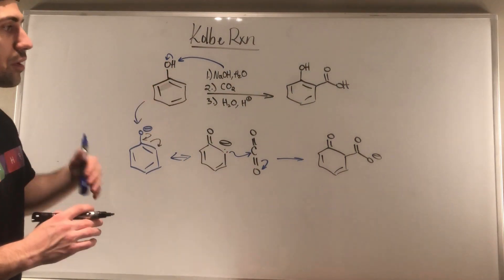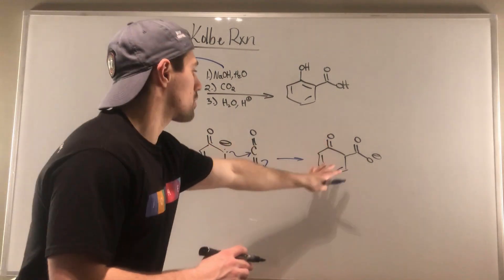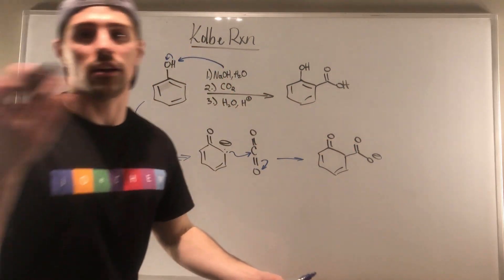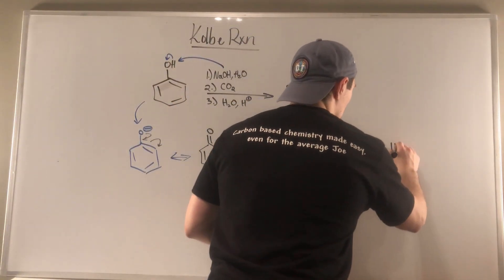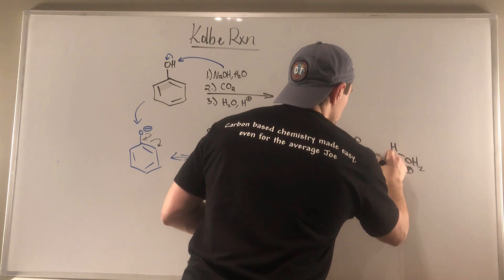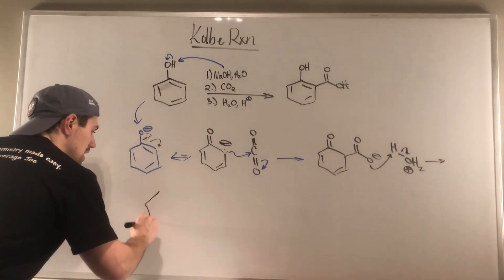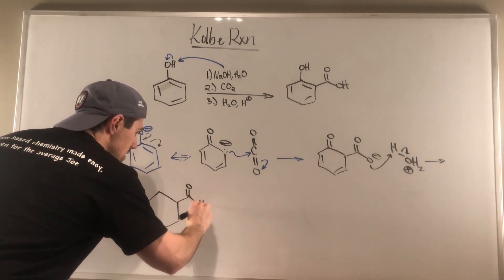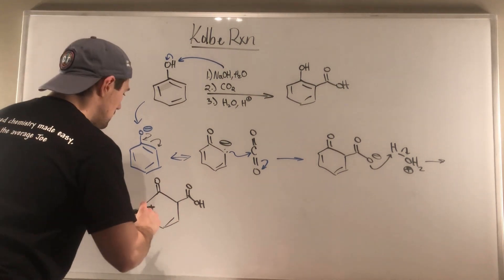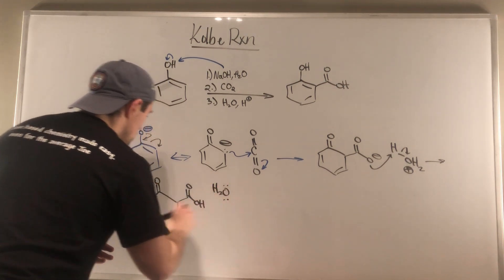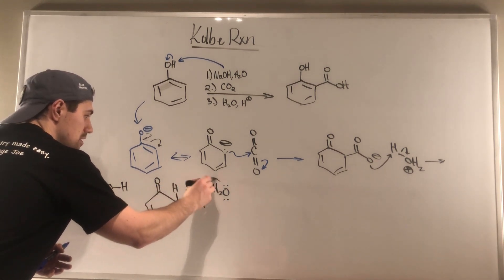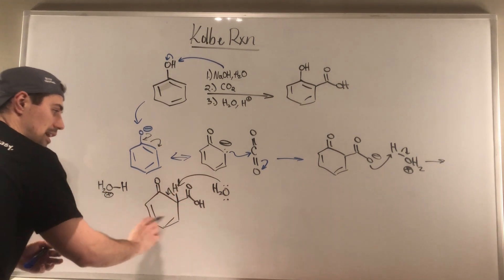Now we're going to get to our acidic workup. This acidic workup is going to do two things for us: it's going to help us restore aromaticity to the ring, get our phenol-ishness back, and it's going to protonate our carboxylate up to a carboxylic acid. We can do it one at a time — here's hydronium. Whether you're using H₂SO₄, hydronium, whatever. So let's get our carboxylic acid back. These things probably happen at the same time, but we're just going to go one at a time. Got our carboxylic acid — and then water is going to help us. The water is going to help rip this proton off, restoring the aromaticity in our ring.